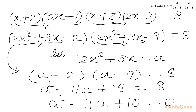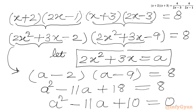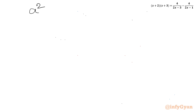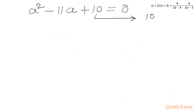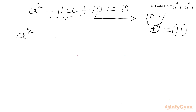Now we will solve this quadratic equation in a. Remember, the substitution was a = 2x² + 3x. The factors of 10 are 10 and 1, and if we add both we get 11. So I can split the middle term and write a² - 10a - a + 10 = 0.